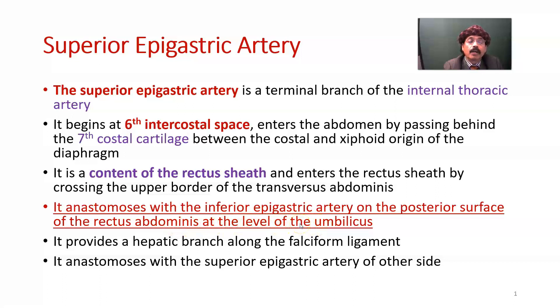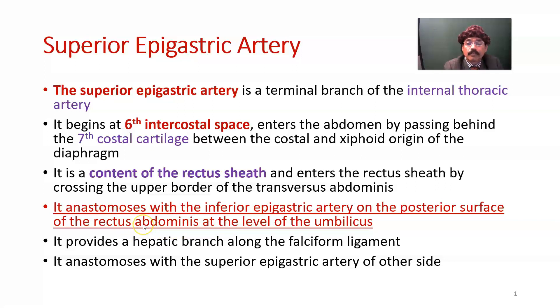The anastomosis may be a little up or a little down, and this anastomosis happens on the posterior wall of the rectus abdominis, and very rarely on the anterior wall of the rectus abdominis.